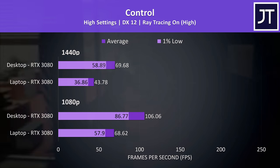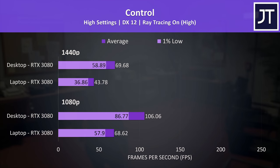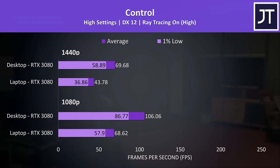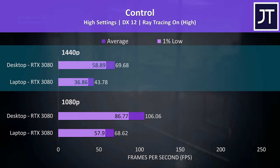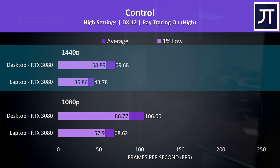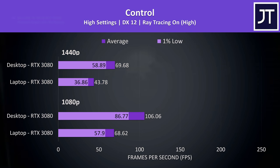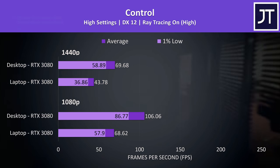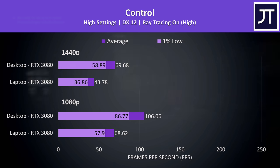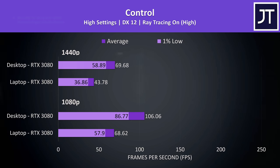I've also tested both with ray tracing enabled. DLSS could have also been used here to boost performance, which would be recommended given the frame rates at 1440p, but I wanted to compare pure RT differences. There's a similar 60% boost at 1440p with the desktop 3080, so a little more of a lead compared to with RT off, though not by much.